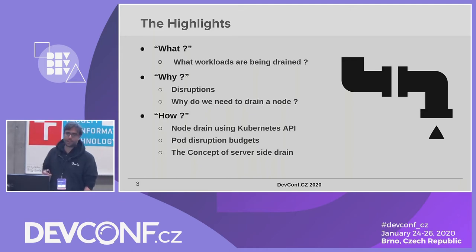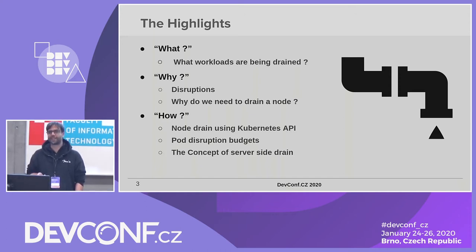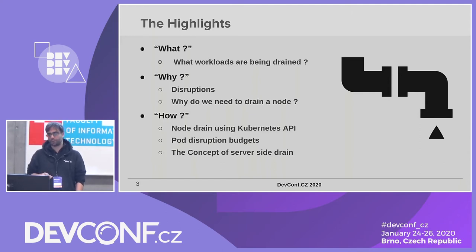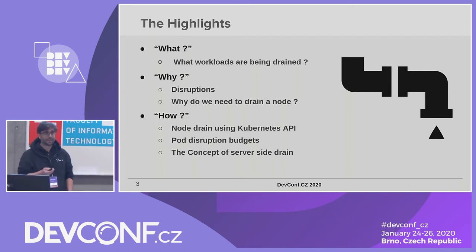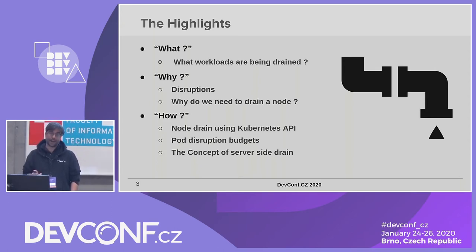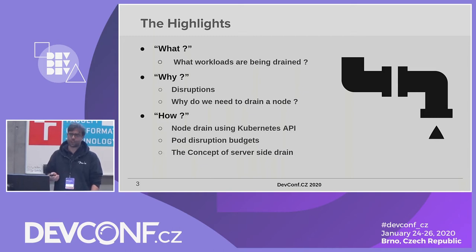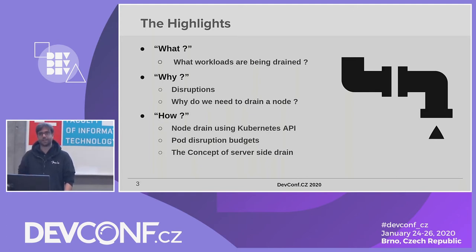Let's get to the topic. On our Kubernetes cluster, when you want to manage it, from time to time we want to perform maintenance operations. Maintenance operation — let's call it our synonym here — is node drain. To understand what is node drain, why we need it, and how we perform it, we'll go through three questions: what workloads are we actually draining from Kubernetes nodes, why we do that, and how. In the how section, we'll go through one or two Kubernetes APIs for node eviction, understand pod disruption budgets, and if we have enough time, I'll dig deeper into server-side drain.